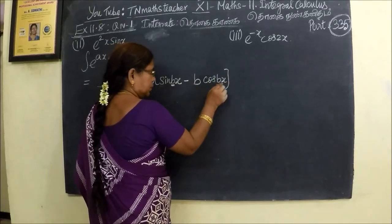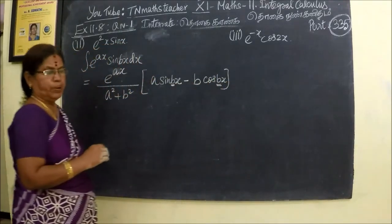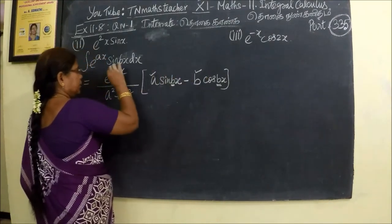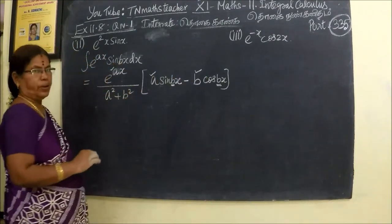Here is bx. Here also you will get b. Here is a, b. Here is a square plus b square.